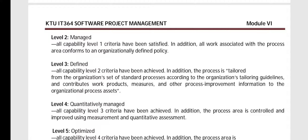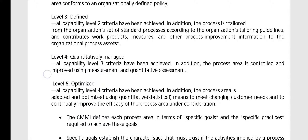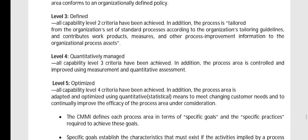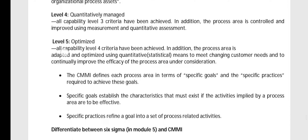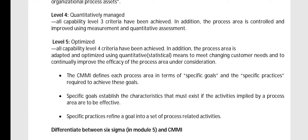Level 4 is the quantitatively managed level. All capability level 3 criteria have been achieved, and in addition the process area is controlled and improved using measurement and quantitative assessment — hence the name quantitatively managed. Level 5 is the optimized level, where capability level 4 has been achieved and in addition the process area is adapted and optimized using quantitative or statistical means according to customer needs.